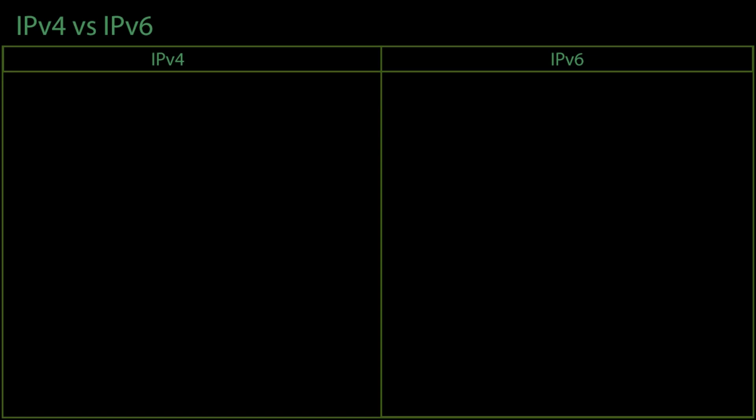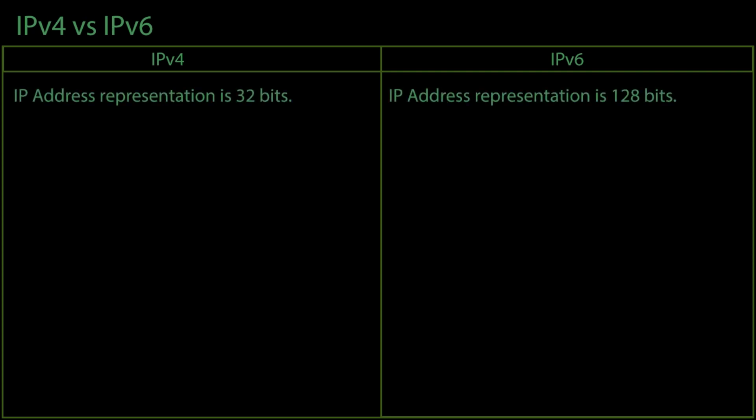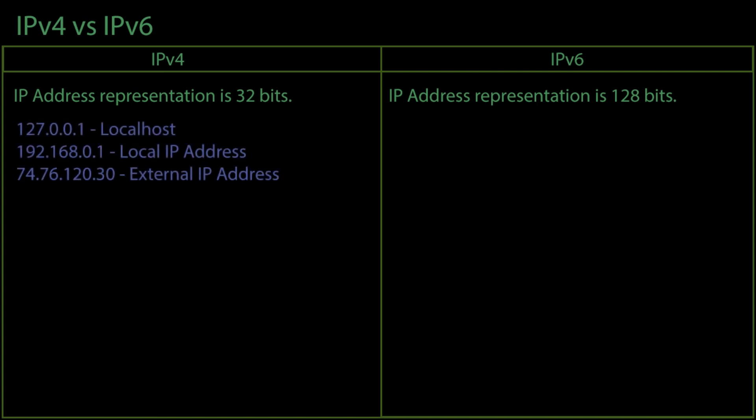In this video, we are going to discuss the difference between Internet Protocol version 4 and Internet Protocol version 6. In version 4, an IP address representation takes up 32 bits. In version 6, an IP address representation takes up 128 bits. You may have seen an IPv4 address that looks something like these examples. Each byte is an unsigned value from 0 to 255 and is separated by a dot in Internet Protocol version 4.